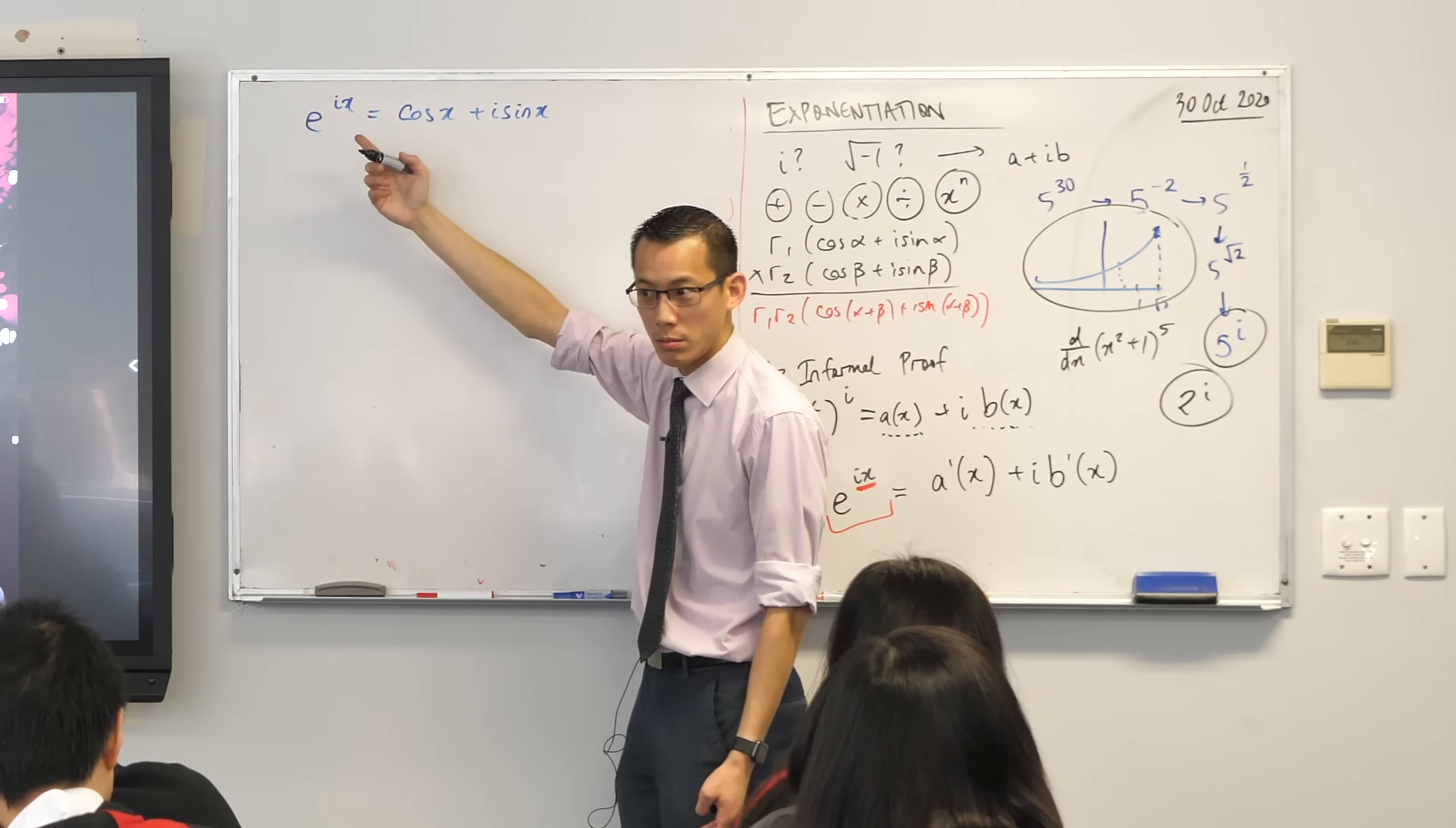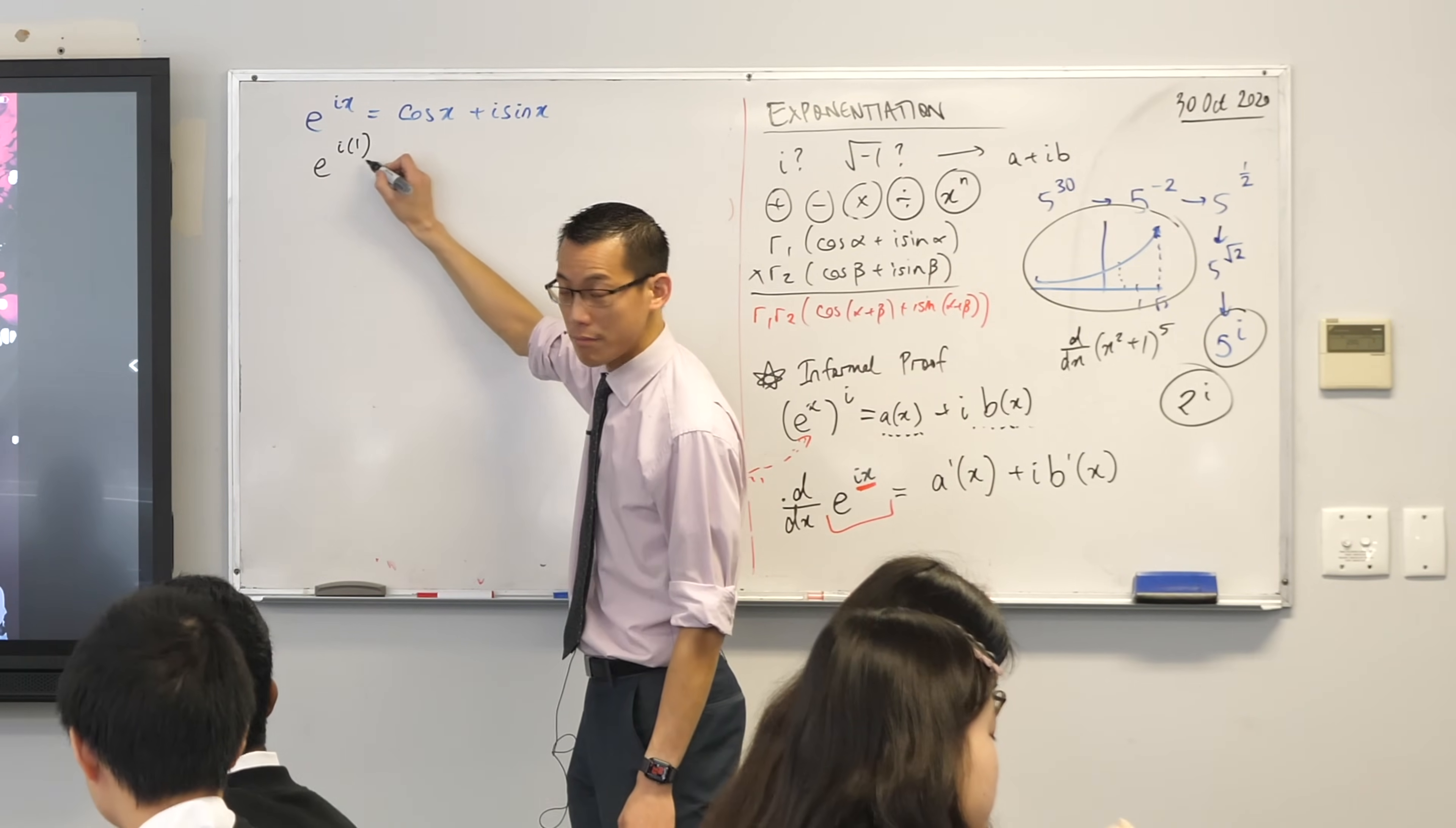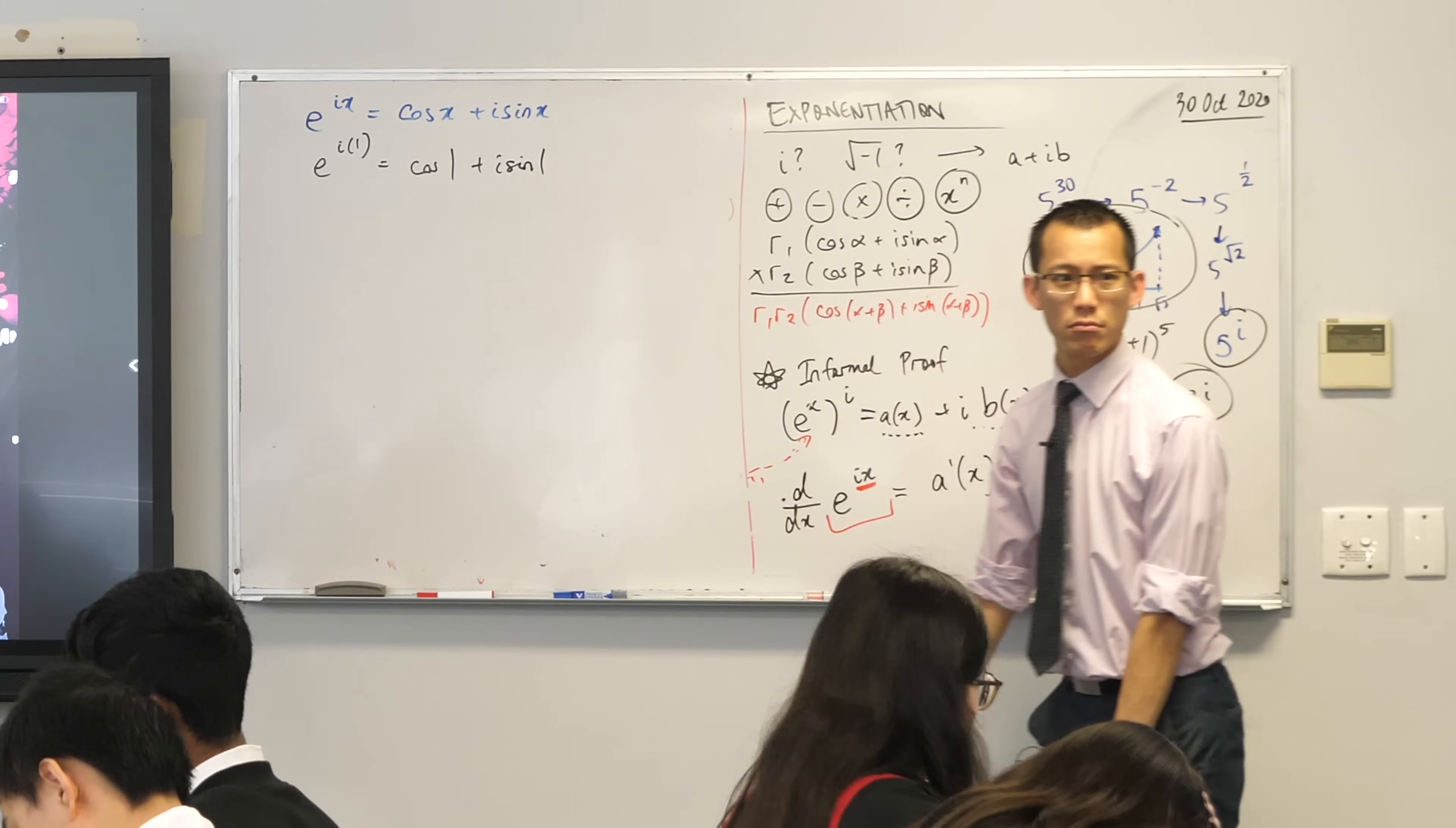x should equal 1. Do you agree with that? If I put in, and please write this with me, right? If I put in x equals 1, I'm going to get, on the right-hand side over here, cos 1 plus i sine 1, okay?